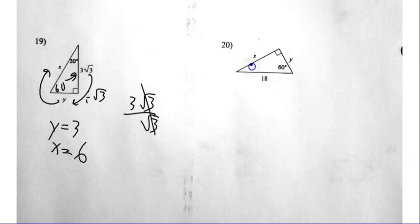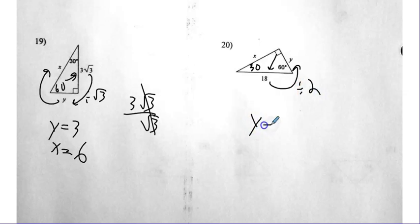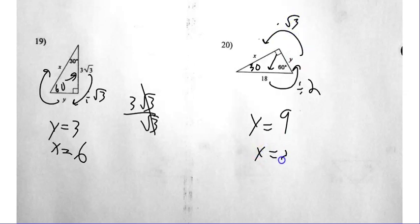Number twenty — I have neither the short nor the long leg. I have the hypotenuse. But I always want to go to the short side, and how do I do that? Simply divide by two. So Y is nine. And how do I go to the long leg? Just tack on a radical three. So X is nine radical three.